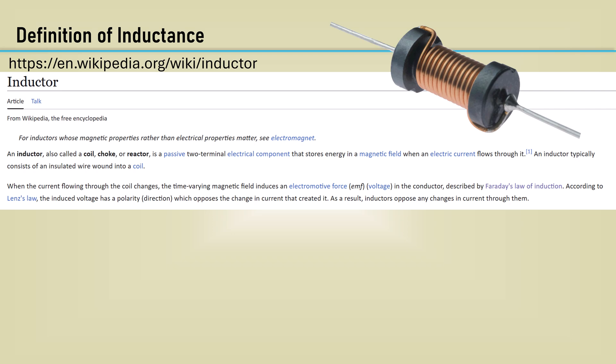Now let's talk about inductance. Here is a part of the Wikipedia page. An inductor is also called a coil, choke, or reactor. It's a passive two-terminal electrical component that stores energy in a magnetic field when an electric current flows through it. An inductor typically consists of insulated wire wound into a coil.